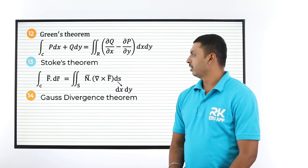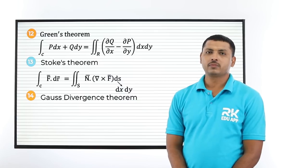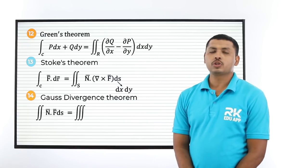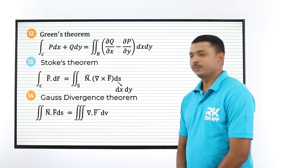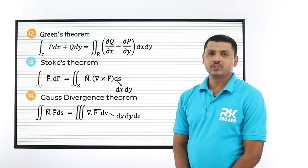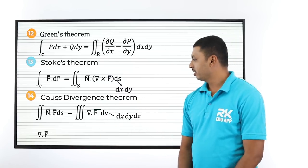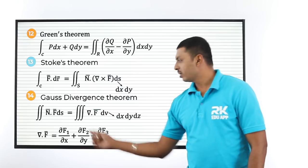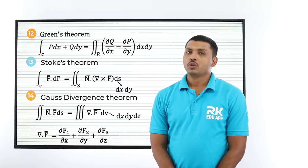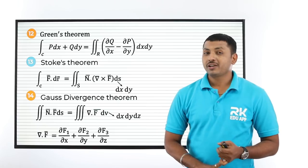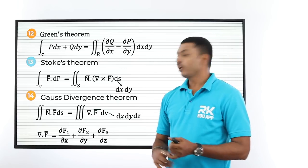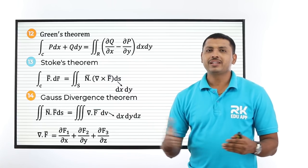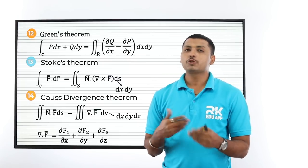Last is Gauss Divergence theorem: ∯ n̄ · F̄ ds = ∭ (del · F̄) dV, where dV = dx dy dz, and del · F̄ = del F₁/del x + del F₂/del y + del F₃/del z, which comes from the divergence formula. So vector differentiation starts with the vector operator and vector integration ends at Gauss Divergence theorem.